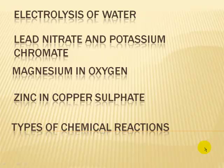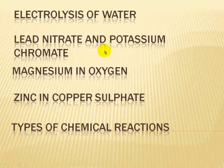That's the end of this series of videos looking at types of chemical reactions. To summarize: we looked at electrolysis of water; then a precipitation reaction between lead nitrate and potassium chromate; then an oxidation reaction where magnesium is burned in oxygen; and lastly, a displacement reaction where zinc displaces copper from copper sulfate.